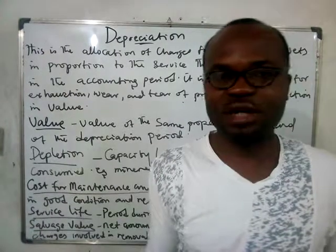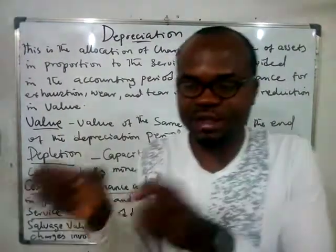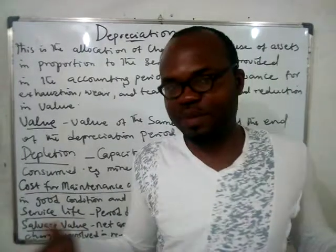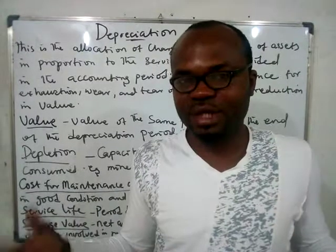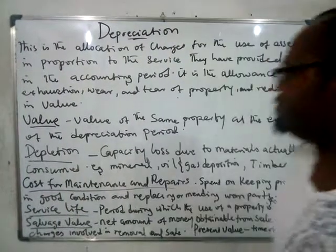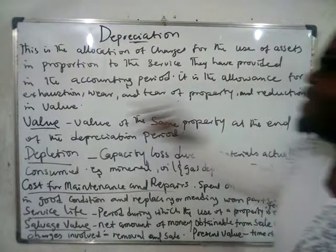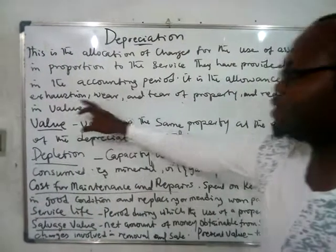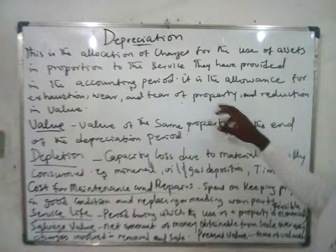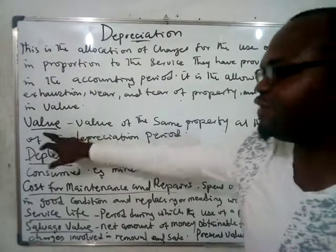This depreciation is in proportion to service — you don't just allocate arbitrarily. You have to watch and see for what length of period you have used this property and how much it has gone down in value. So it is the allowance for exhaustion, wear and tear of property, and the reduction in value.